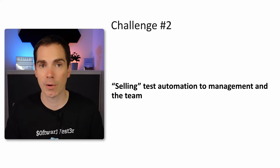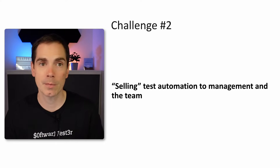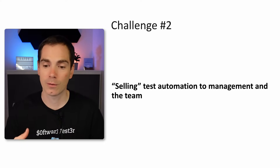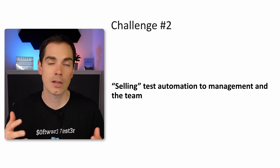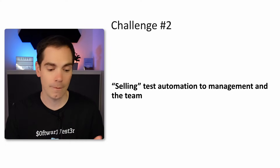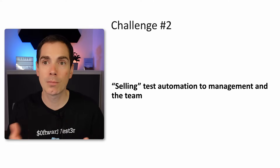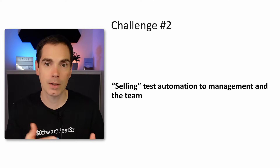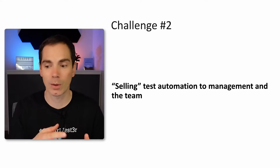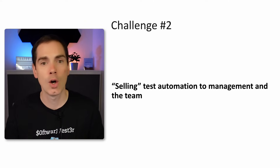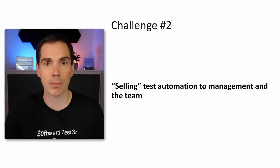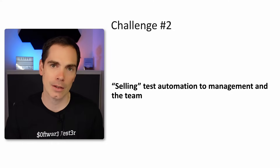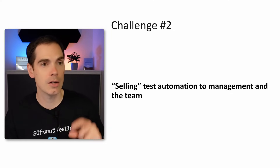You have to fight to get test automation implemented — talking to your team, to product, to developers who may need to support you. At a bigger scale you have to sell it to upper management and show them the benefits. Build small proof of concepts, show speed improvements, and explain what it means in terms of money saved. You have to speak their language in order to sell test automation to them. That's a tough challenge, especially if you're not good at adapting your language to your audience.